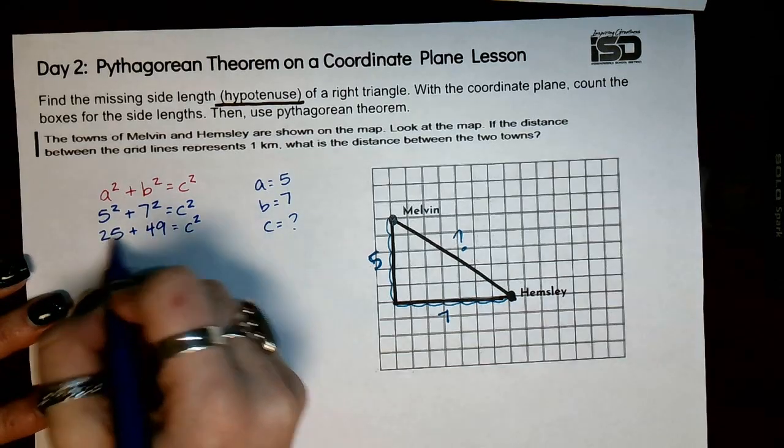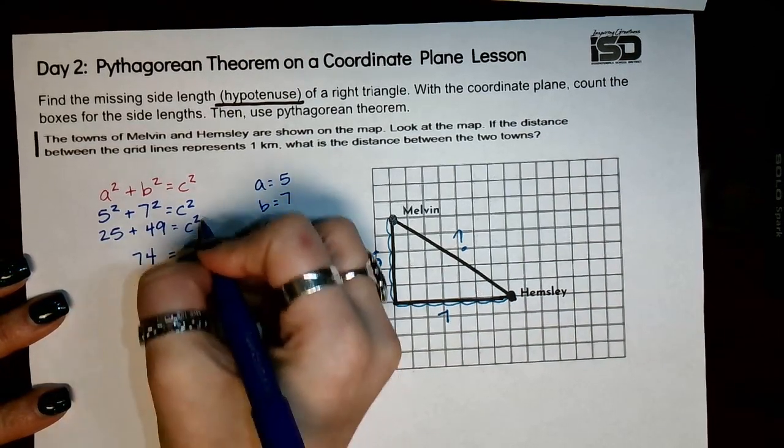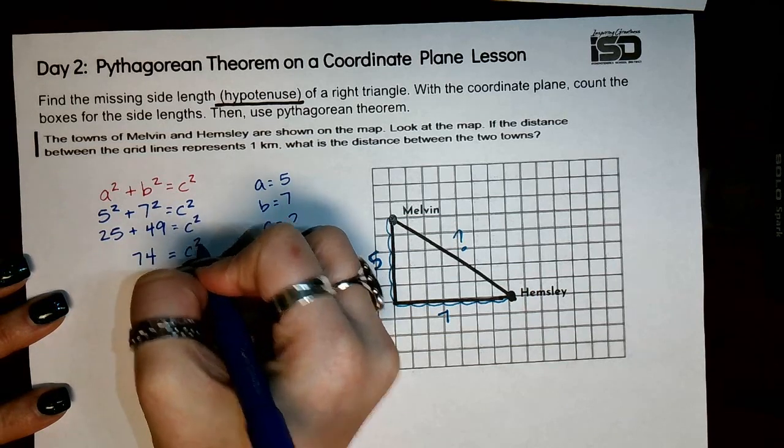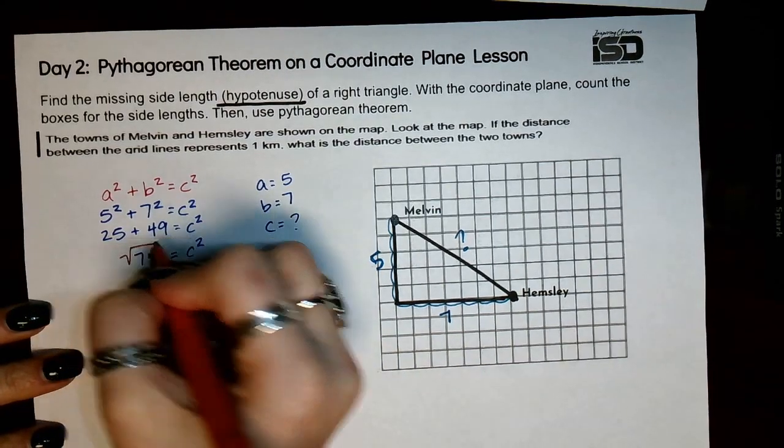So then I'm going to add these two values together, which I'm going to get 74, equals c squared. So now from here, remember our last step, we're always going to find that square root.